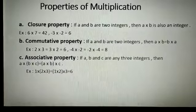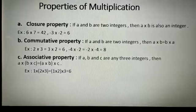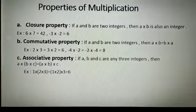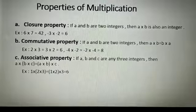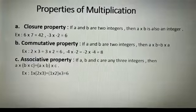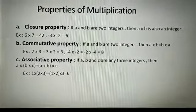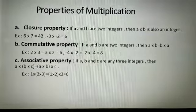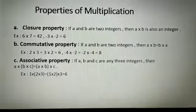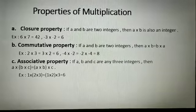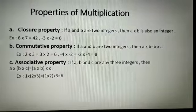For example, take 6 and 7. Both numbers are integers. After taking their multiplication — 6 multiplied by 7 — you will get the answer 42. Is 42 an integer? Yes, 42 is an integer. That means it is closed under multiplication. Next example: minus 3 and minus 2, both integers. Their multiplication gives plus 6, which is also an integer. This property is called closure property.